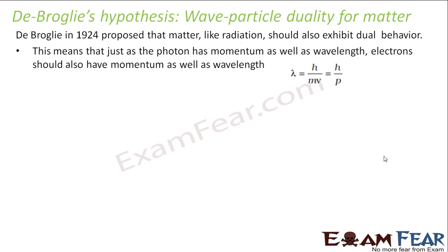Just as the photon has momentum as well as wavelength, electrons should also have momentum as well as wavelength. For de Broglie, every object — whether microscopic or macroscopic — can behave as a wave. However, for macroscopic objects the mass is very large, therefore the wavelength associated with them becomes very small, and the wave nature is not much visible. In the macroscopic world, you do not see particles behaving like waves because the wavelength associated with them is extremely small.